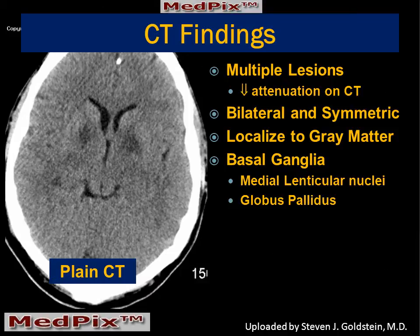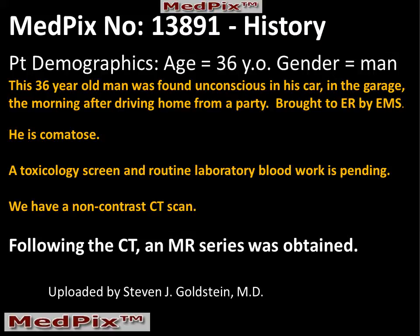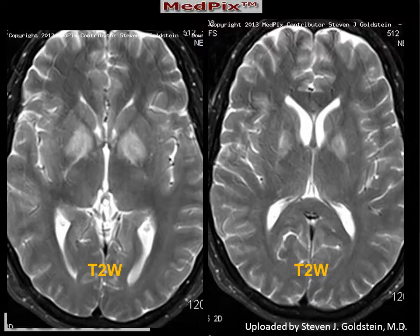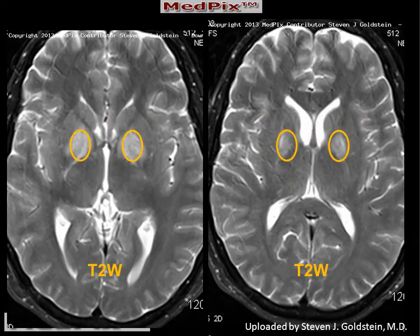So this patient has multiple lesions of decreased attenuation on the CT. They're bilateral and symmetric, localized to the gray matter of the basal ganglia, and most importantly, they're localized to the globus pallidus. Following the CT, an MR series was also obtained. It demonstrates corresponding abnormalities involving the medial portion of the lenticular nucleus, the area of the globus pallidus.